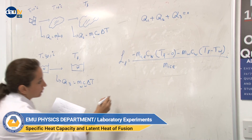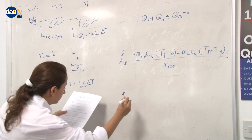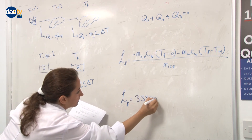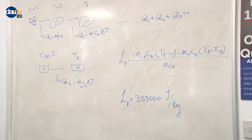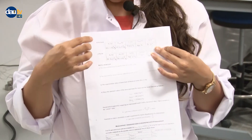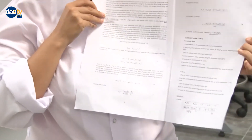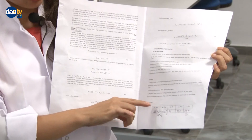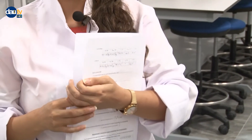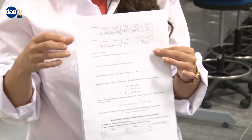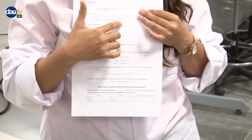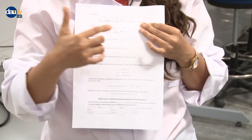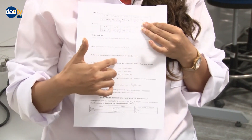The real value of L_f according to the manual is 333,000 J/kg. You will define your experimental value and at the end calculate the error percentage. You complete the tables for iron, brass, and ice, converting all parameters to SI units — for example, grams to kilograms — then write your values, compare with the real ones, and define the error percentage.